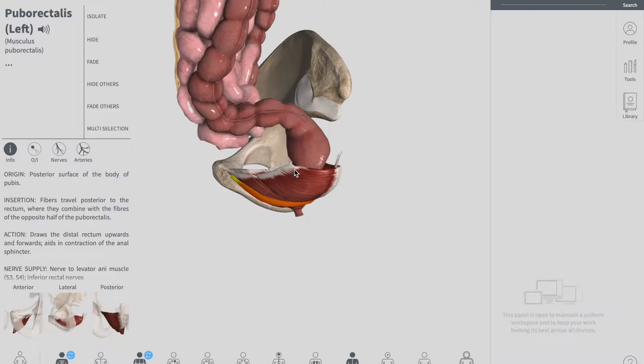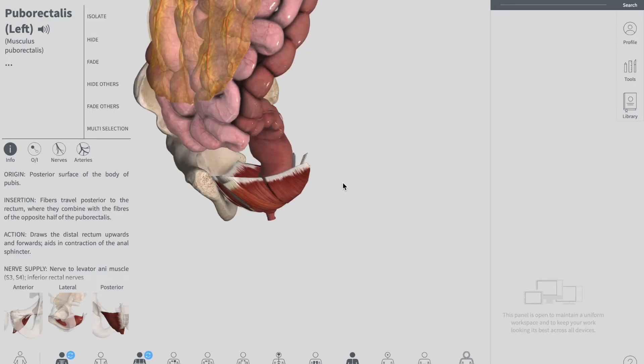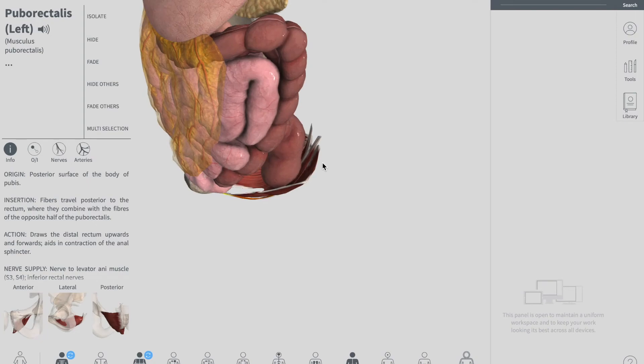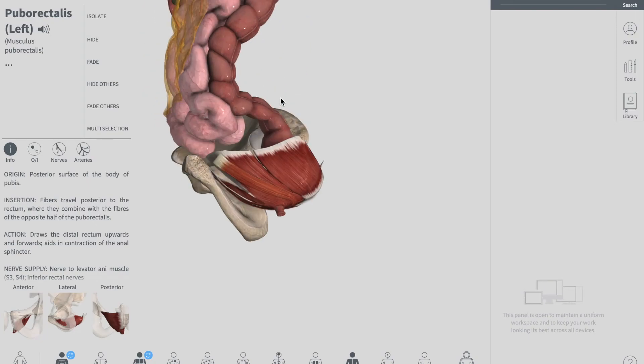And the final segment of your rectum is the ampulla, which relaxes to accumulate and temporarily store feces until your defecation occurs. The ampulla is also continuous with the anal canal, which passes through the pelvic floor and ends up into your anus. This is your pelvic floor and it ends up into your anus down there, you can see it.